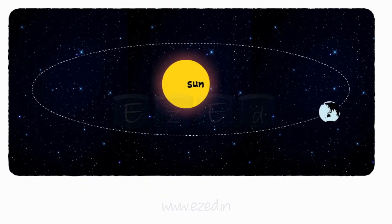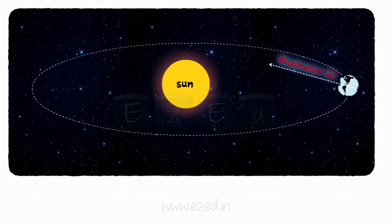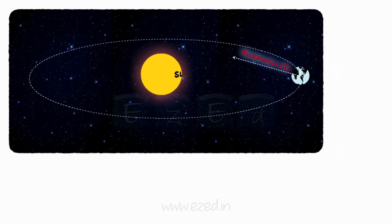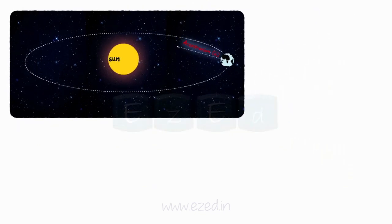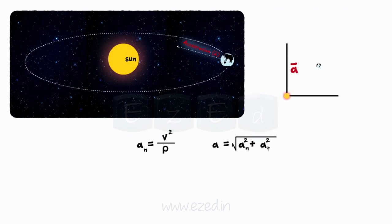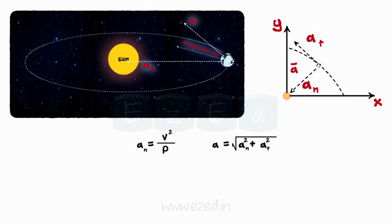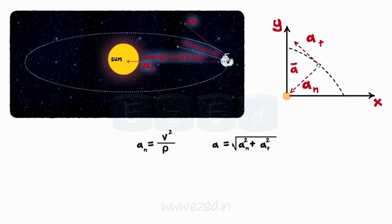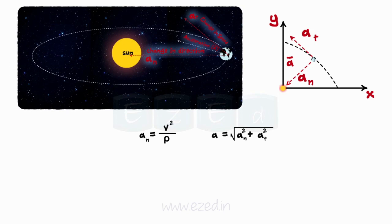As velocity keeps on changing in curvilinear motion, it results in acceleration being present at that instant. In a curvilinear motion, the acceleration vector can be split along the tangent to the path and normal to the path. The normal component of acceleration represents the change in direction of motion and is directed towards the center of the curvature. The tangential component of acceleration represents the change in speed of the particle.